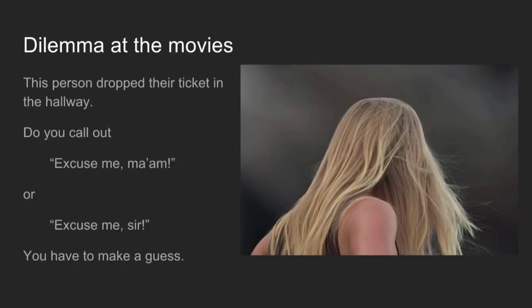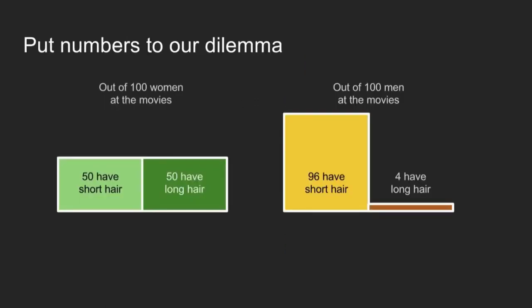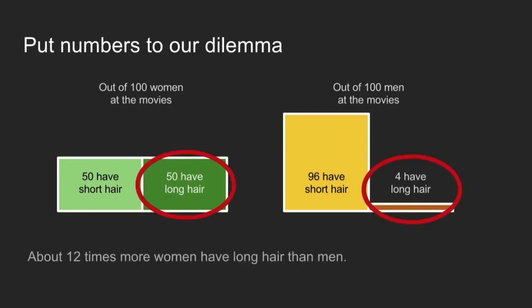To illustrate it, imagine that you're at the movies and someone drops a ticket. You pick it up and you can see them from behind — you know they have long hair, but you don't know whether they're a man or a woman. So you have to make a guess based on what you know about the attendees at your movie theater. You might say, 'Excuse me, ma'am, is this your ticket?' Now imagine instead that this person is standing in line for the men's restroom. Knowing this extra piece of information, you might make a different guess. Bayesian inference is a way to capture this common sense knowledge about the situation and help you to make better guesses. To put numbers to this: out of 100 women at the movies, 50 have short hair and 50 have long. Out of 100 men, 96 have short hair and four have long. We can see there are definitely more women with long hair than men with long hair, so it's a safe bet to assume this person is a woman.